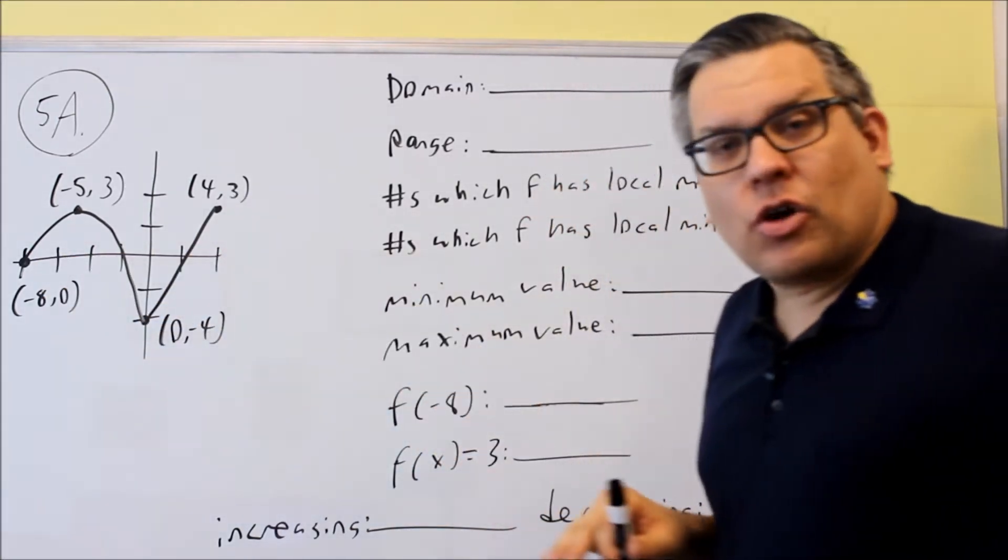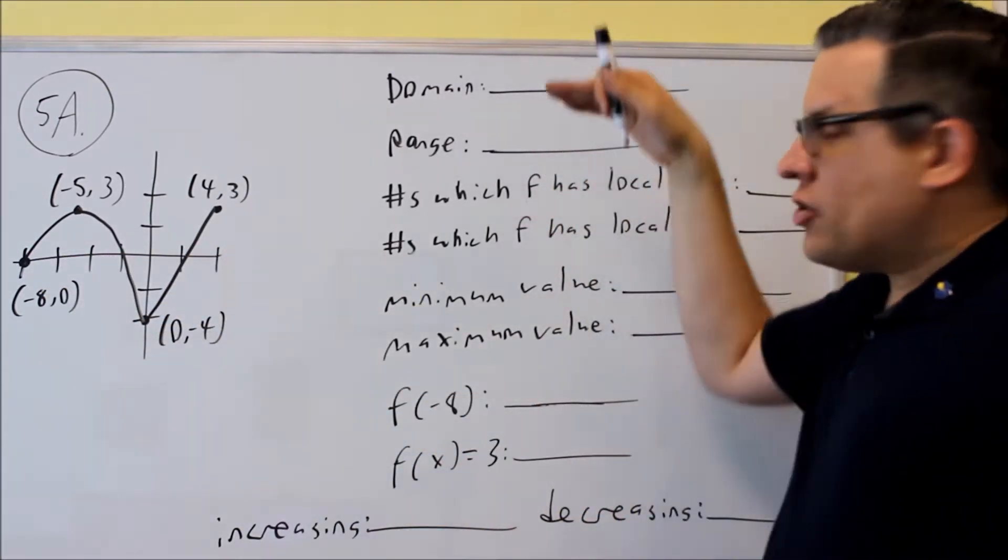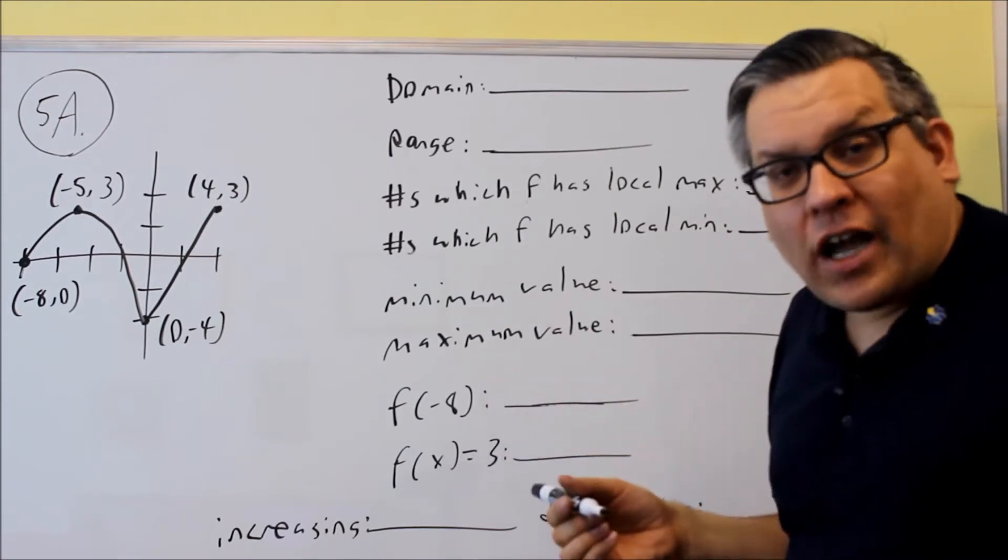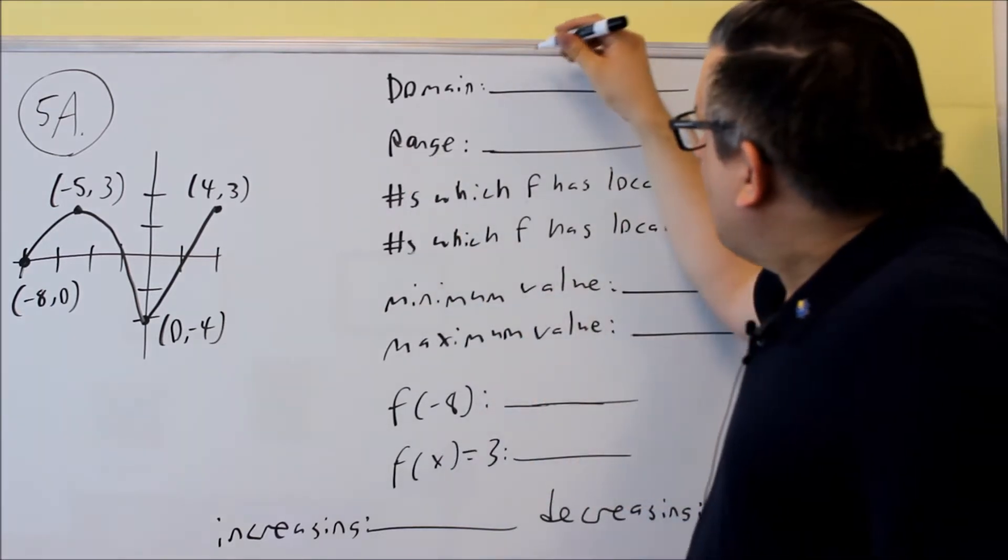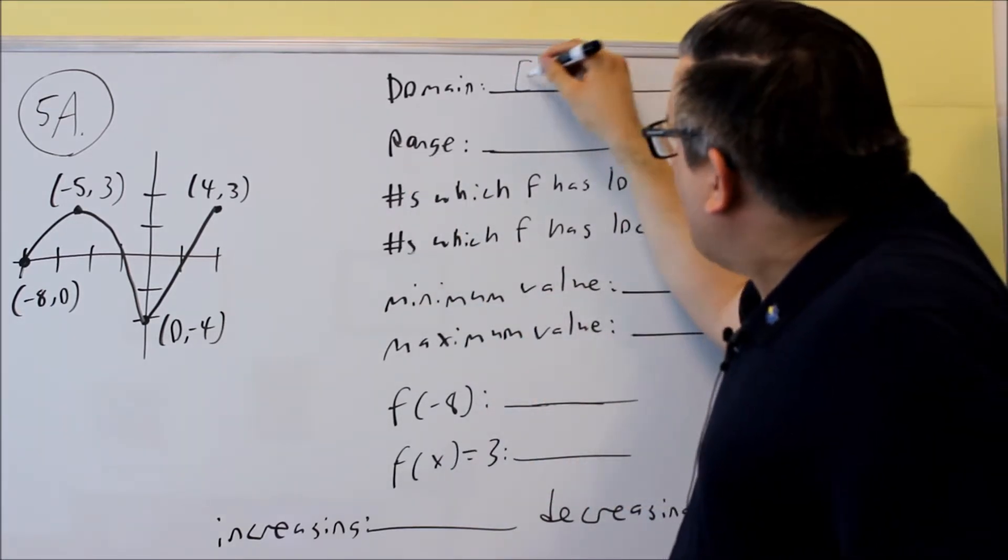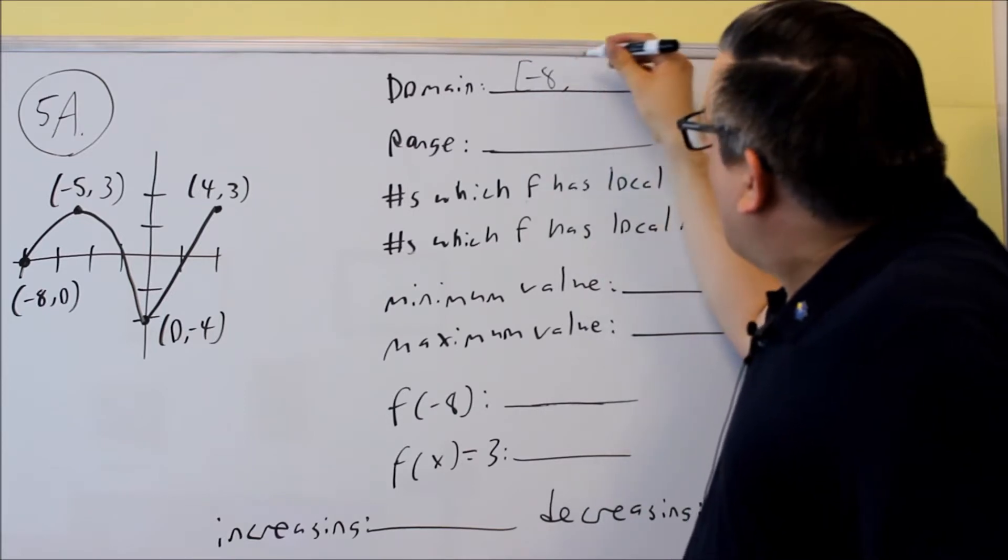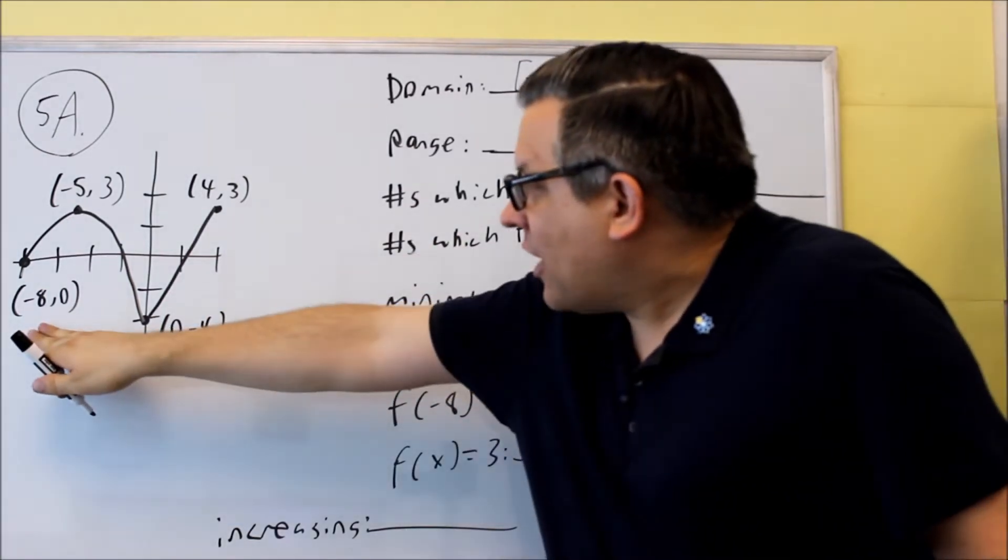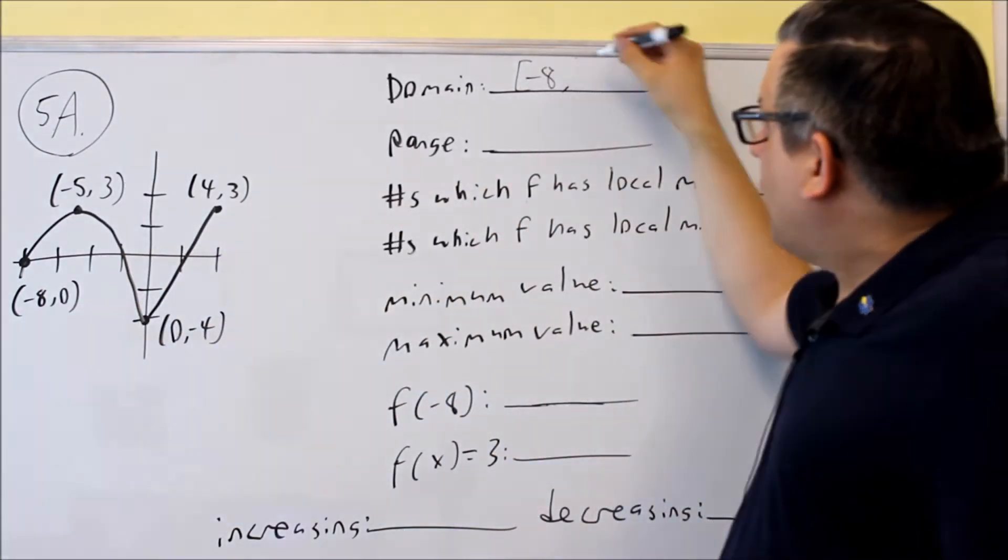Now this one, I have closed circles for everything, which means by domain and range, they're going to have all brackets. Okay, so domain is going to be the x values that are used here. It's going to be from negative 8, the smallest x value I have. The largest x value I have is 4.